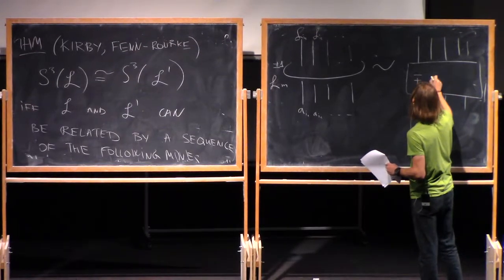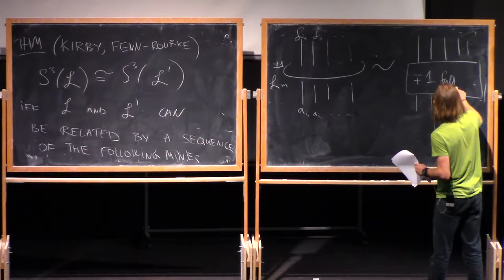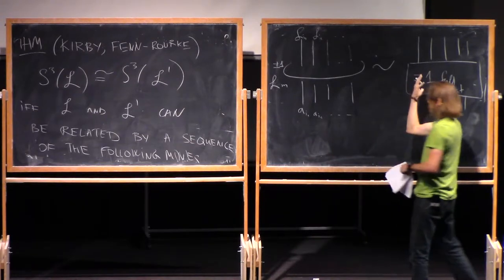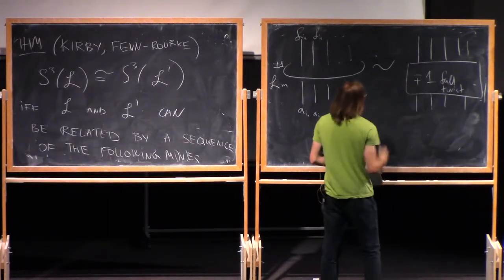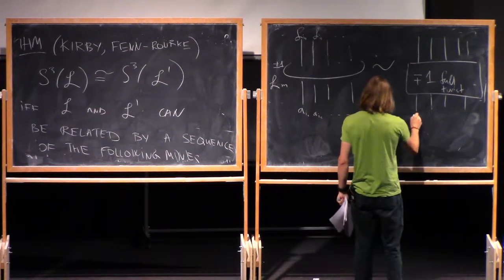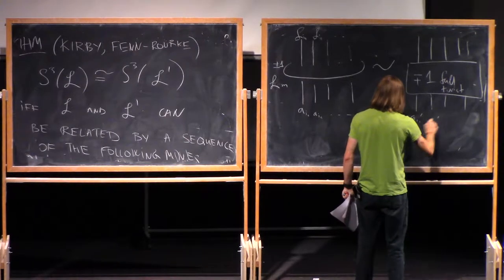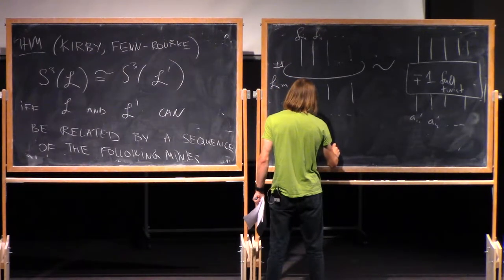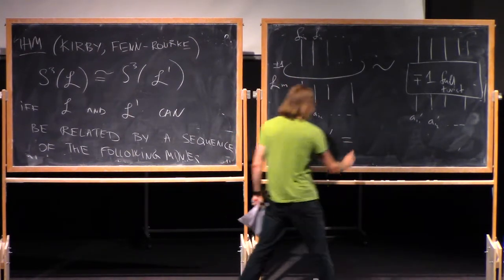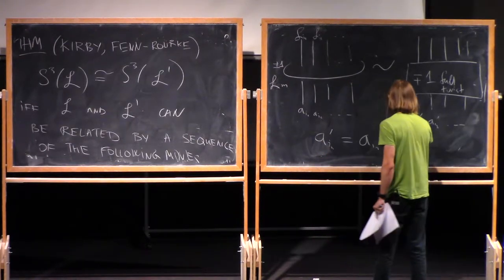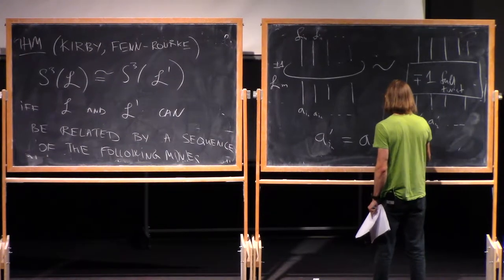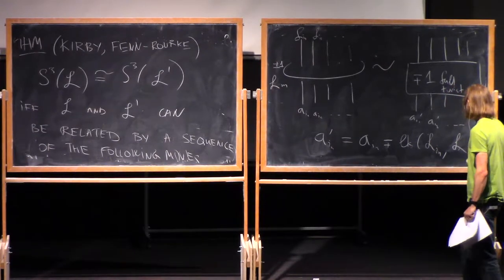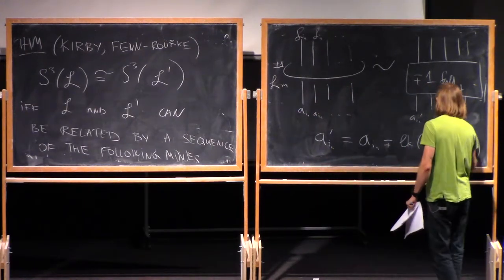And so if the framing on this unknot surrounding a bunch of other link components is plus or minus one, and the framings here, let's say they are Ai1, Ai2, and so on, and this link can be replaced by the following. Here I make a minus plus one full twist.